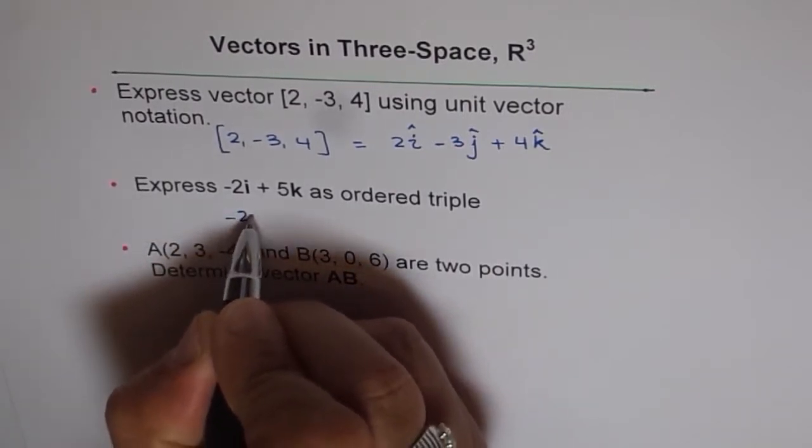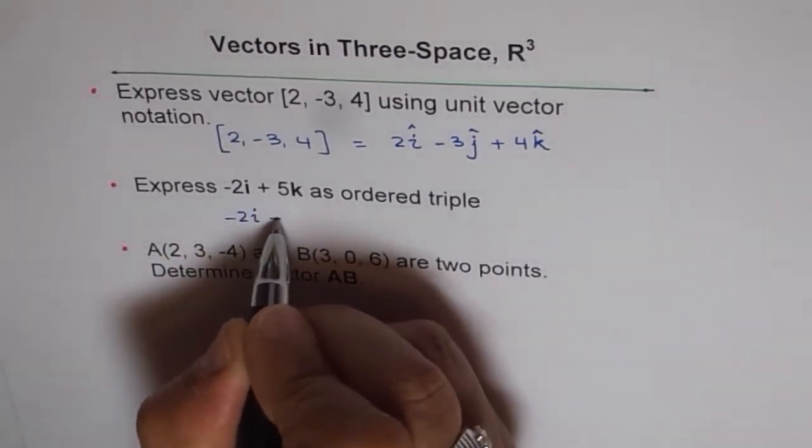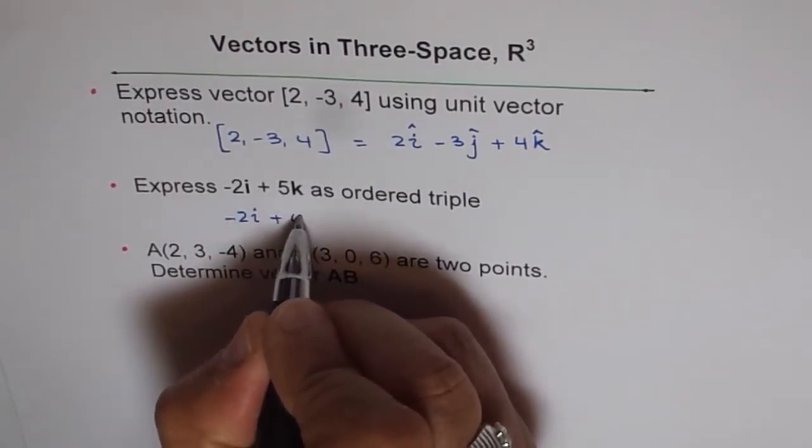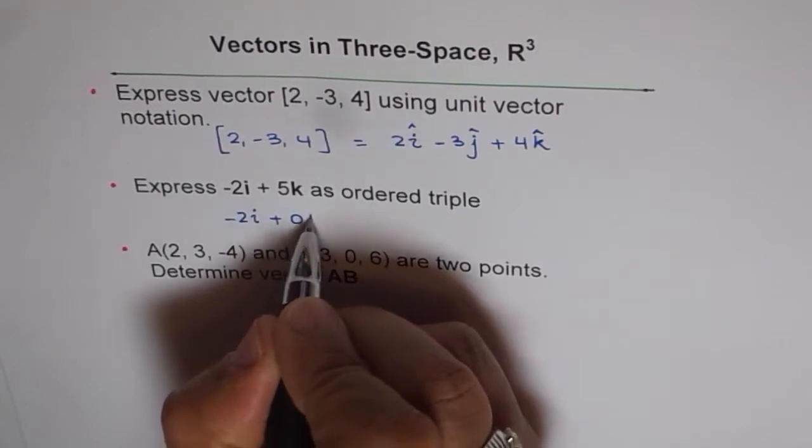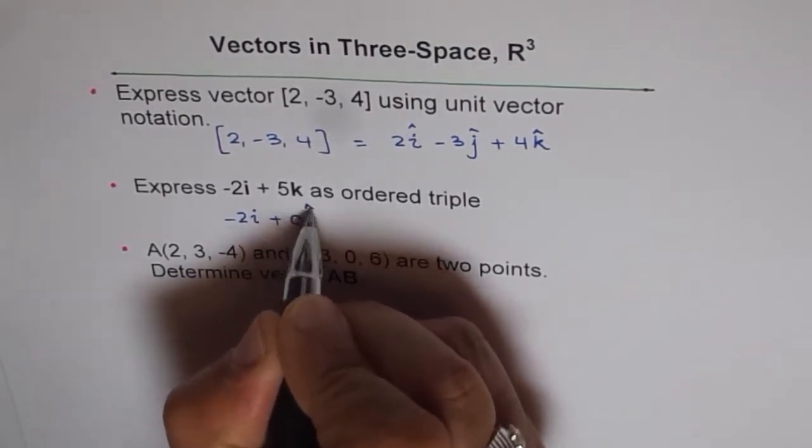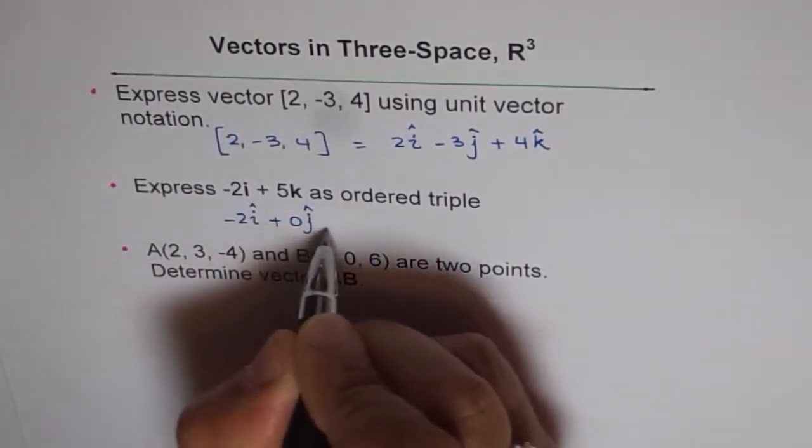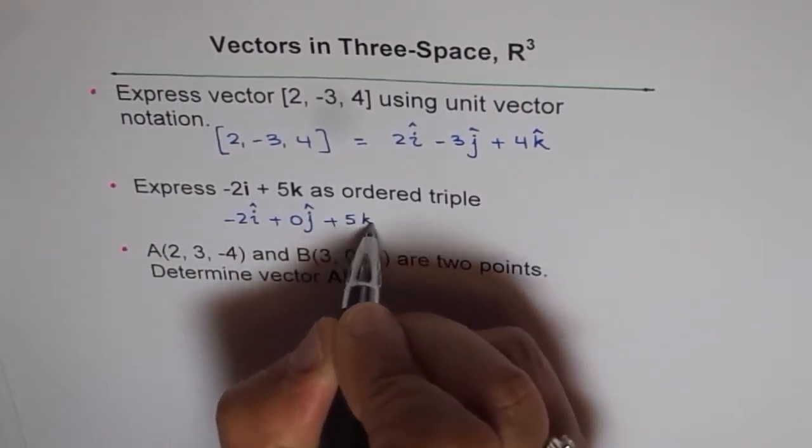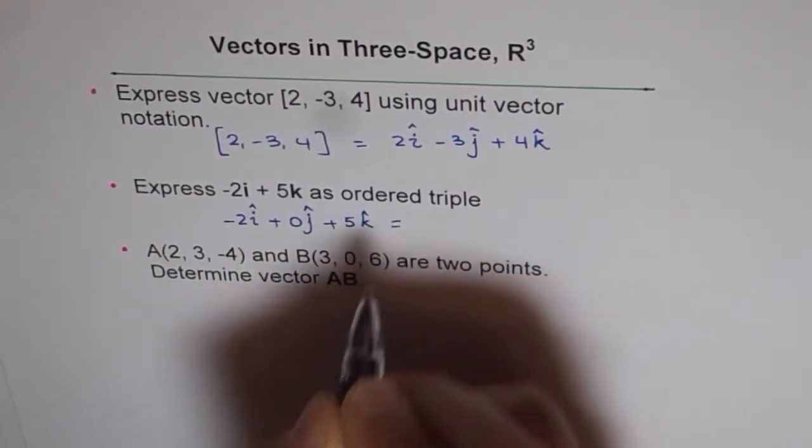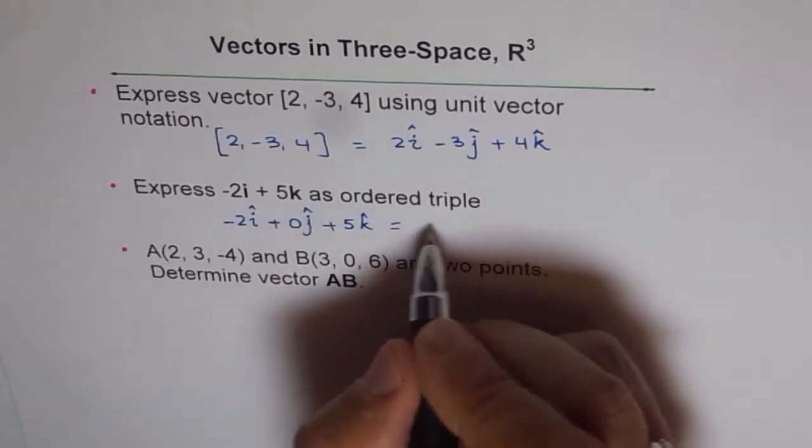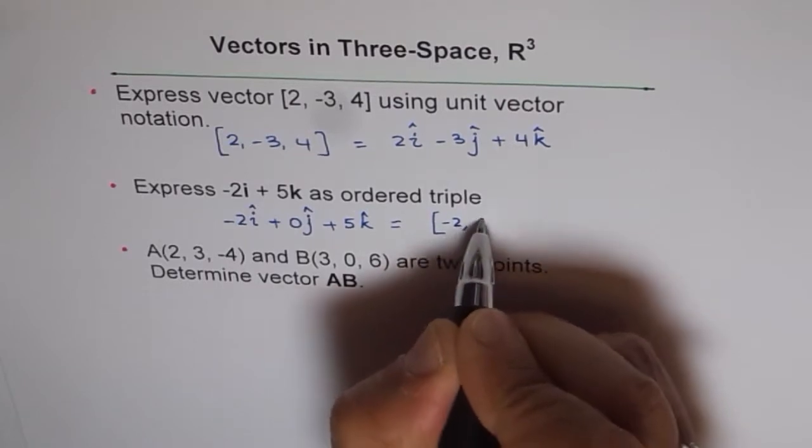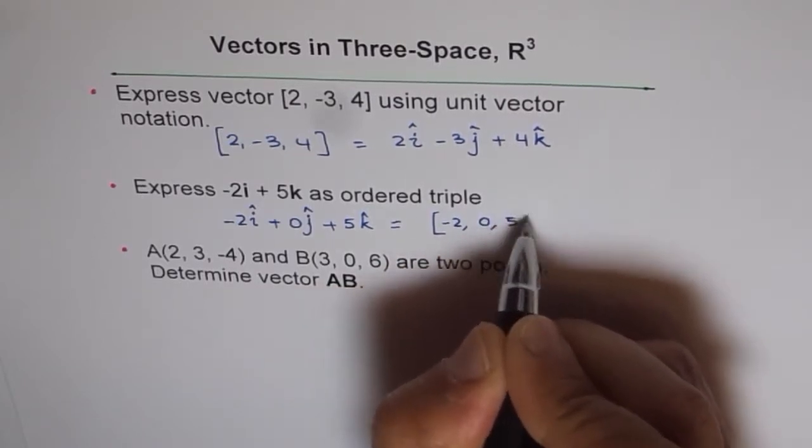We have -2i, that is along i, and along the j-axis we really do not have anything. That means the constant must be 0. So it is -2i + 0j + 5k. Now we can write this as an ordered triple. That will be [-2, 0, 5].